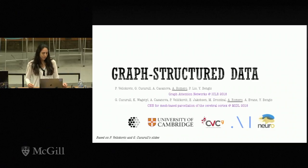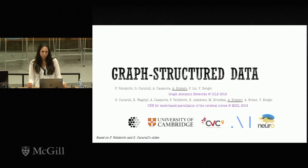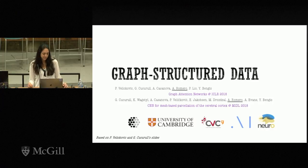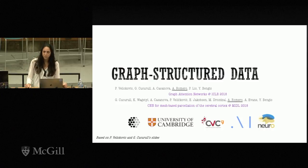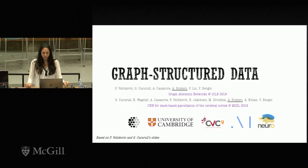Now let me completely switch gears to graph structured data. In this second part I'll cover two works published this year: the graph attention networks framework published at ICLR, and its extension and application to the parcellation of cortical meshes presented at MICCAI about a month ago. This work is in collaboration with researchers at the Montreal Institute for Learning Algorithms, University of Cambridge, Computer Vision Center, and the MNI.